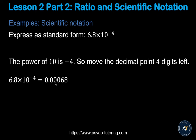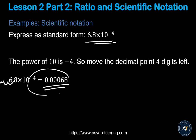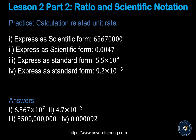Try this one yourself: 6.4 times 10 to the negative 4. Move the decimal four places to the left — 1, 2, 3, 4 — filling in zeros as needed. There are a few more practice problems — pause the video and try them, then check your answers. Watch the video first, then practice lesson two on the application or web subscription for homework and practice tests to see how much you've learned. Keep practicing — it will help you a lot. Thank you.